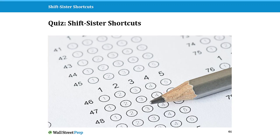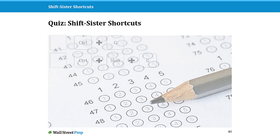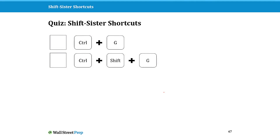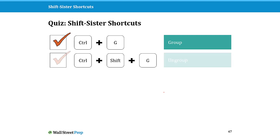Let's quickly walk through and see if you know a couple of these shift sister shortcuts already. Here's a pretty easy one: if Ctrl+G is to group, what do you think the shift sister shortcut Ctrl+Shift+G will do? It's going to ungroup.